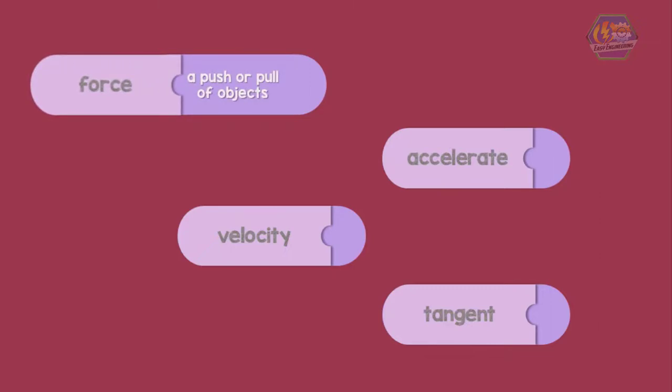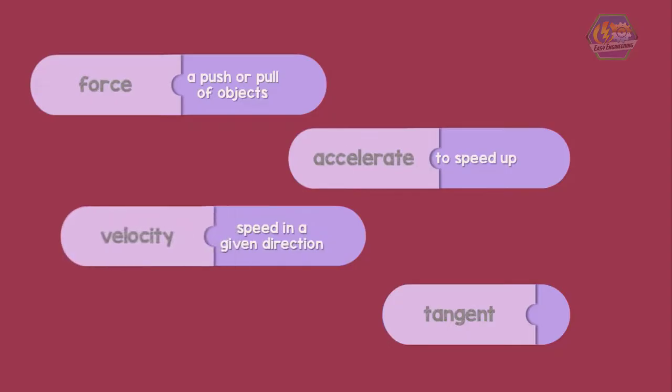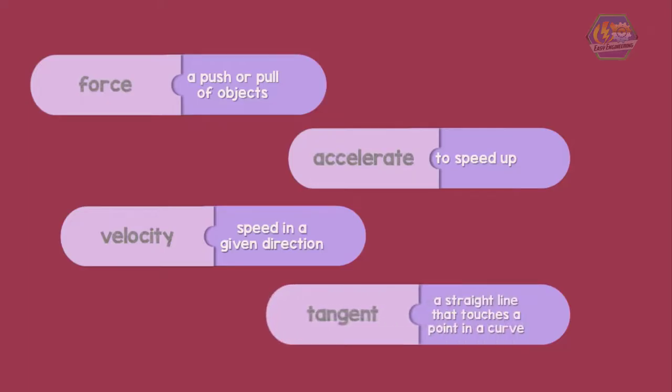Next is accelerate. It means to speed up. Then we have velocity. It is the speed of something in a given direction. Next is tangent. It is a straight line that touches but not intersecting a point at a curve.